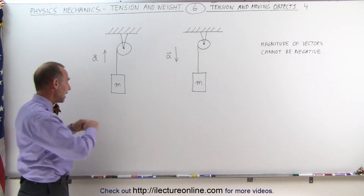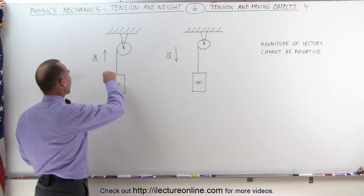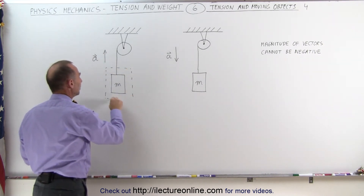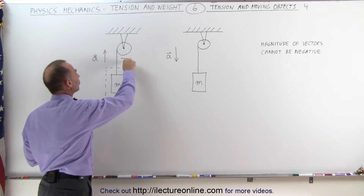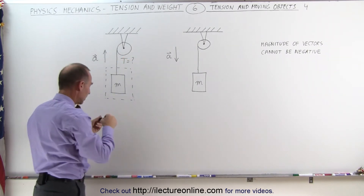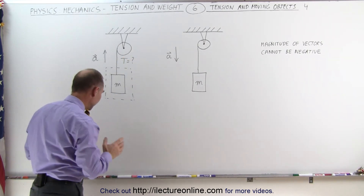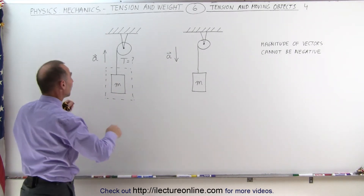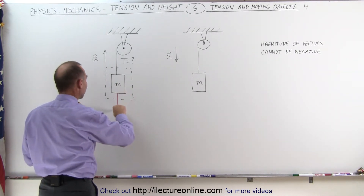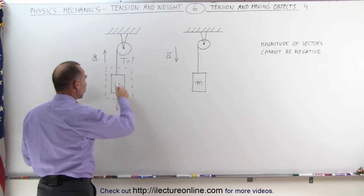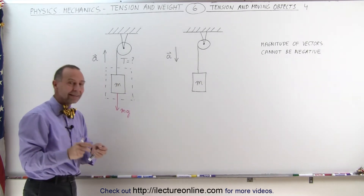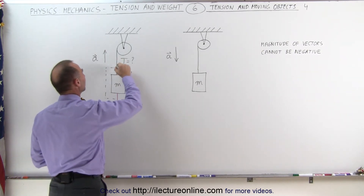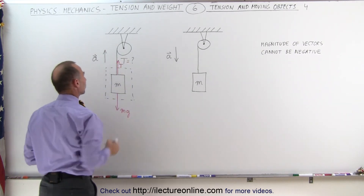Let's go ahead and draw a free body diagram of the situation where we have an object that's accelerating upward and we're trying to find the tension in the string or rope that pulls the object upward. We need to identify all the forces acting on the object. We have the force of gravity acting downward, mg. The arrow downward indicates that mg is in the negative direction. We have the tension pulling upward, which is in the positive direction.